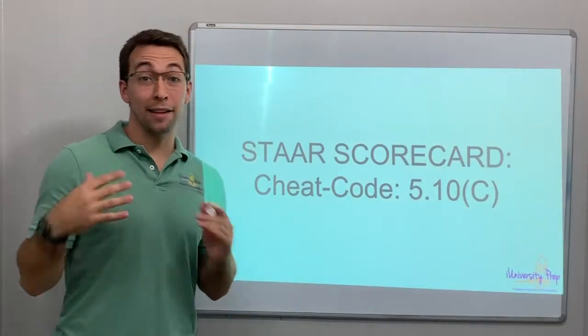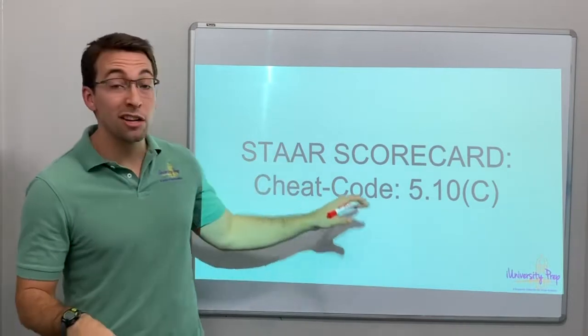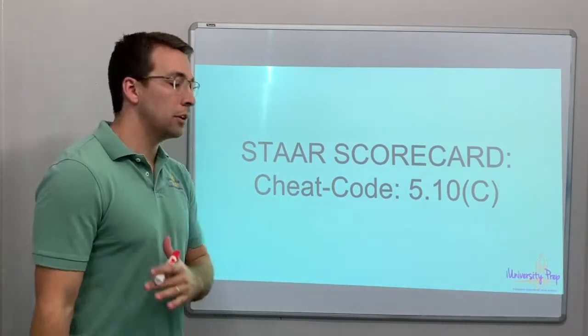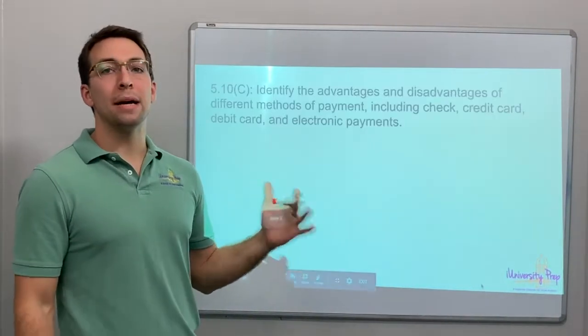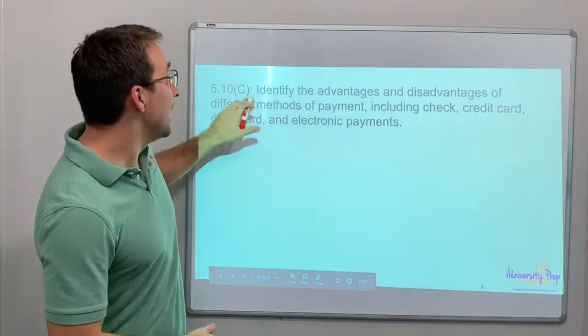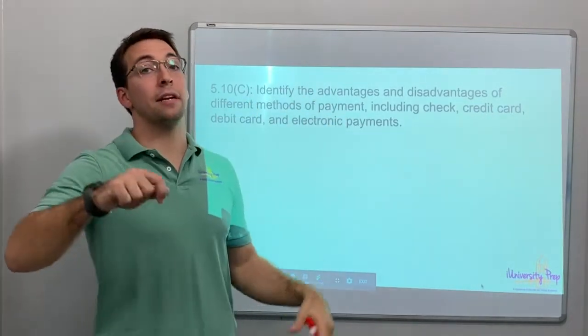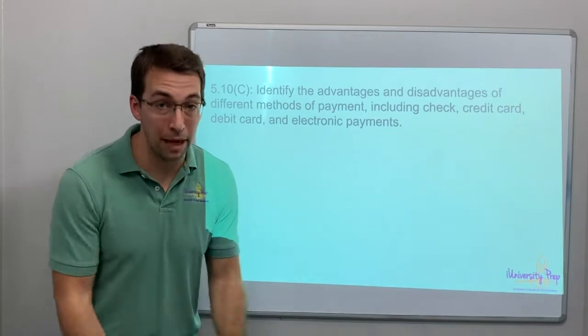Hello, everyone. Thanks for tuning in. Star Scorecard, cheat code 5.10c. So remember, 5.10 is all about money. 5.10c: identify the advantages and disadvantages of different methods of payment.